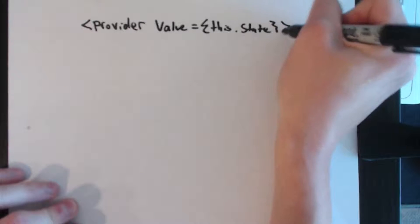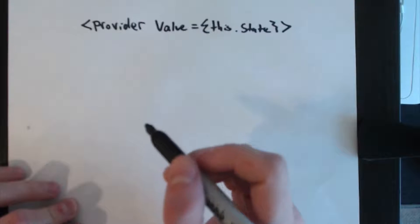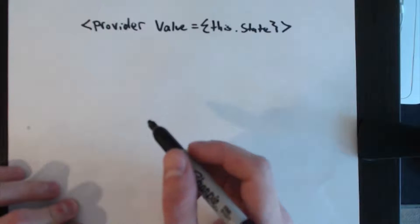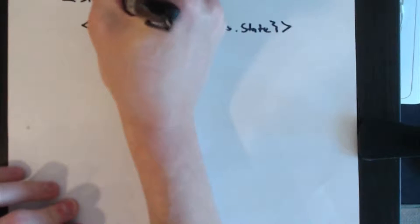It may be many levels down—you don't want to pass it as props. So in some component we're going to render a provider and pass a value with our local state. This component we're writing, let's just call it the state manager component.